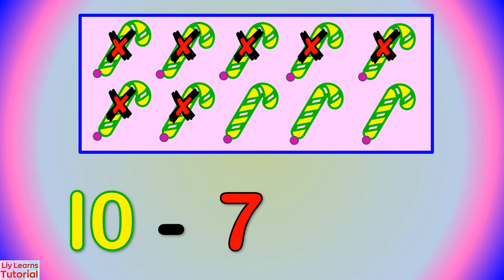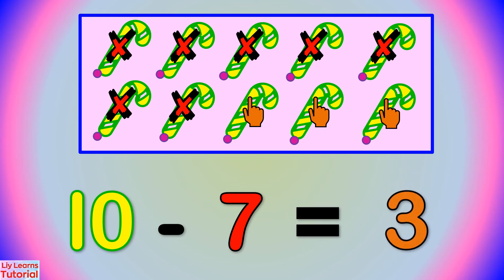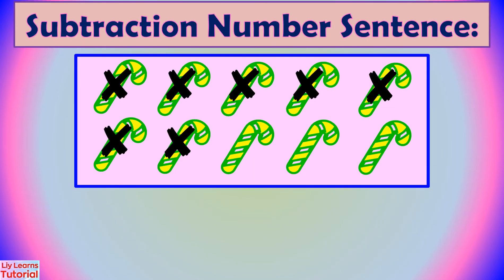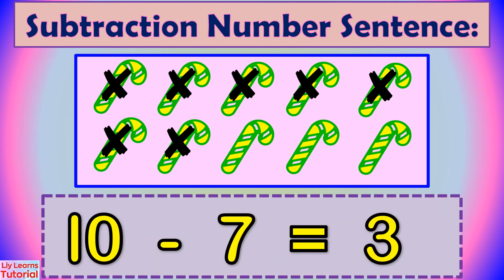Finally, count how many candy canes haven't been crossed out. 1, 2, 3. 3 candy canes. That is the difference. We write equals 3. We have written 10 minus 7 equals 3. Therefore, the subtraction number sentence is 10 minus 7 equals 3.